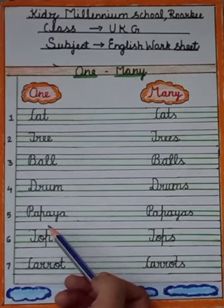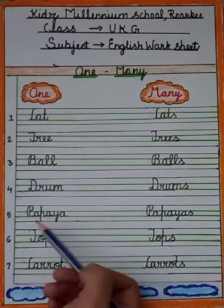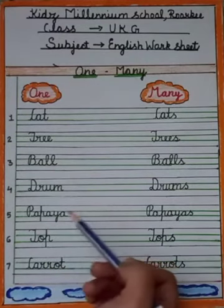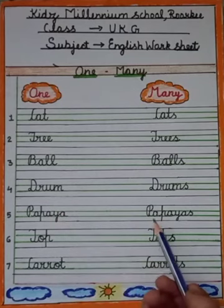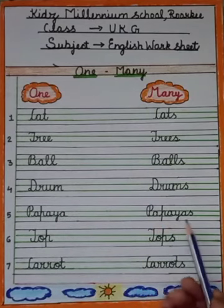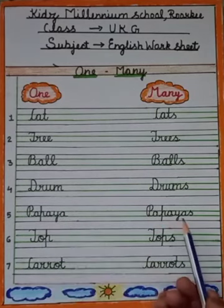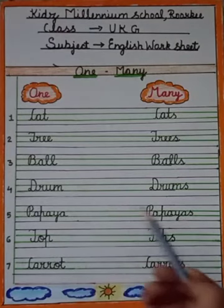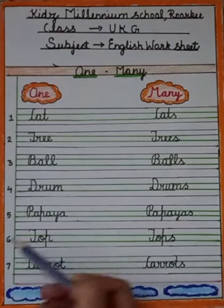Number five is p-a-p-a-y-a, papaya. And many of papaya is p-a-p-a-y-a-s, papayas. Ek papaya — ek se zyada papayas.